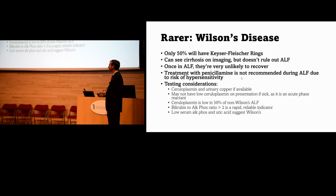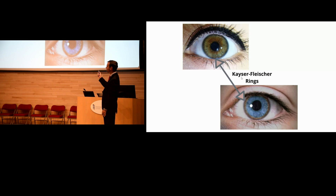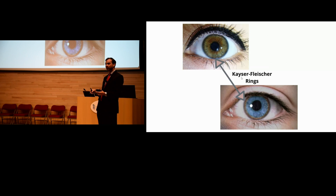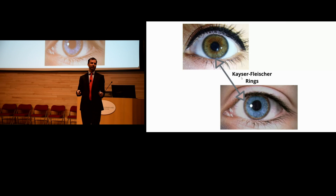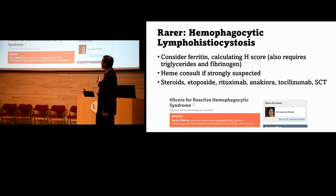Here's what Kaiser-Fleischer rings look like. They appear as rings around the eyes. My dog had rings around her eyes that looked like this, and I was convinced for a little while that poor Chloe had Wilson's disease — but she does not. Dogs may have similar-appearing rings normally.